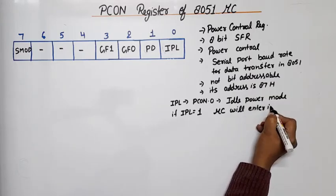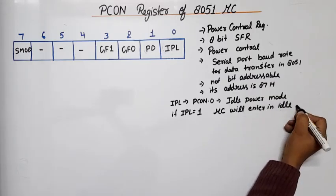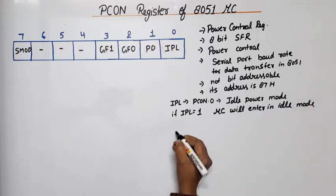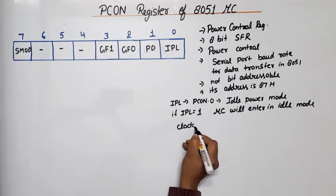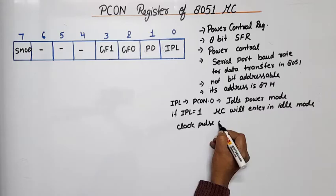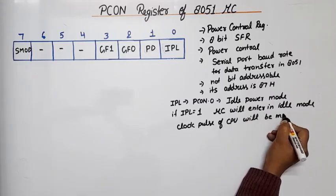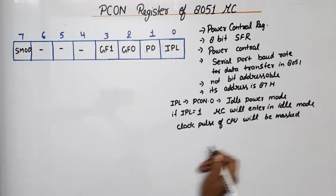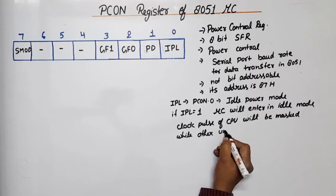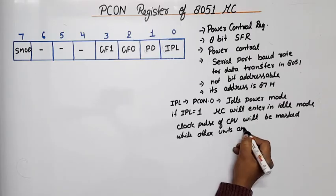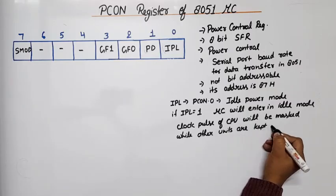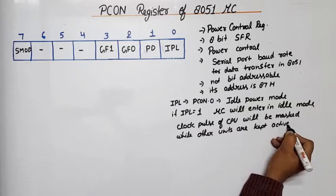In idle mode, clock pulse of CPU will be masked while other units are kept active. Means in this case our CPU will not be used, so our power will be saved.